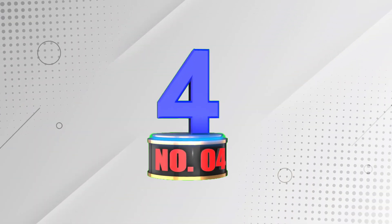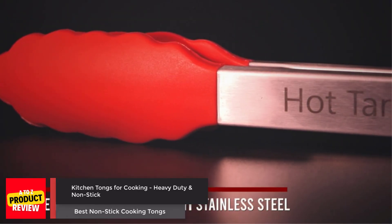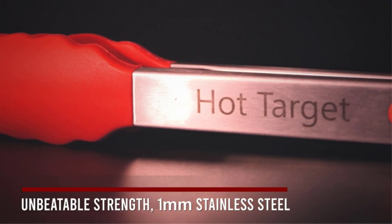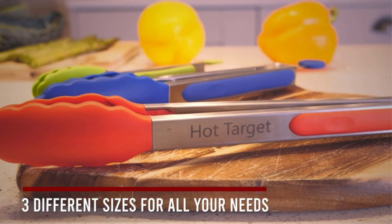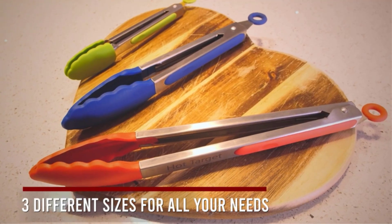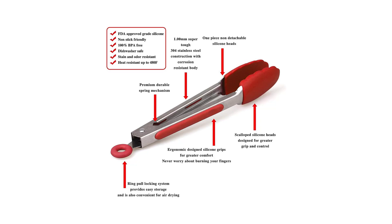Number four: Kitchen Tongs for Cooking Heavy-Duty and Non-Stick. Hot Target Kitchen Tongs are a set of three versatile cooking tongs made of durable stainless steel, with a corrosion-resistant body and heat-resistant up to 600 degrees Fahrenheit. These tongs are perfect for all your cooking needs.